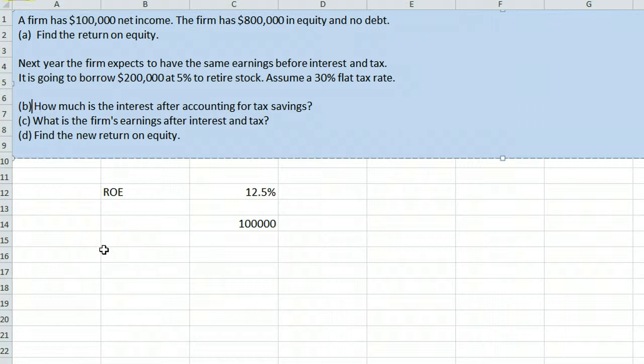It's asking how much is the interest after accounting for tax savings. The interest is $200,000 times the interest rate, 0.05, 5%, which is $10,000.